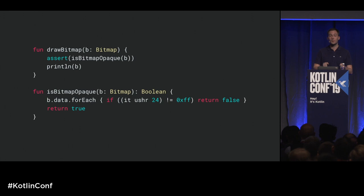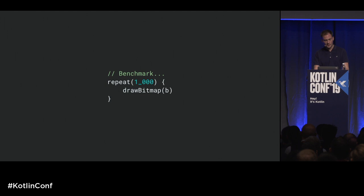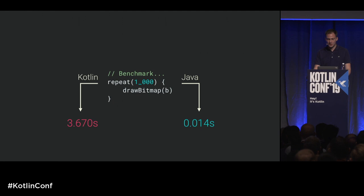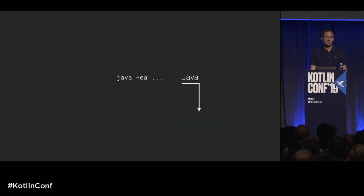We can write the same example in Java, using the assert keyword instead. We still use the isBitmapOpaque function. To compare them, I call drawBitmap a thousand times on a large bitmap and measure how long it takes. With Java it takes 0.014 seconds — really fast. The same code in Kotlin takes almost four seconds — much, much slower. If we enable assertions with the -ea flag (assertions are disabled by default in the VM), then Java takes as much time as Kotlin. So what is going on?